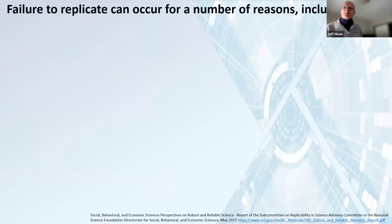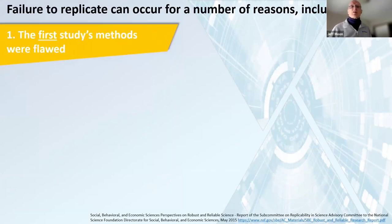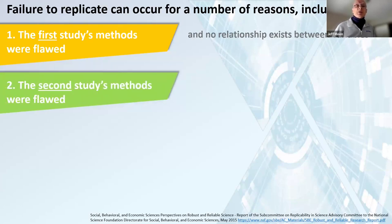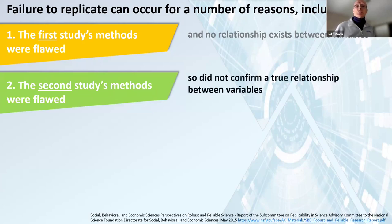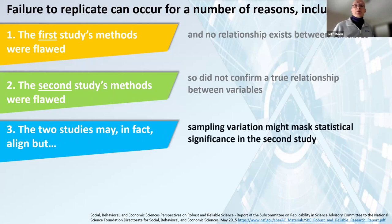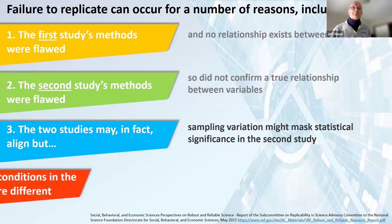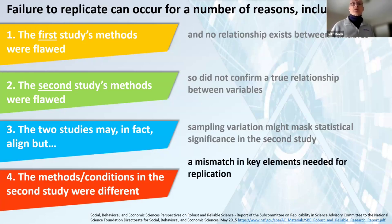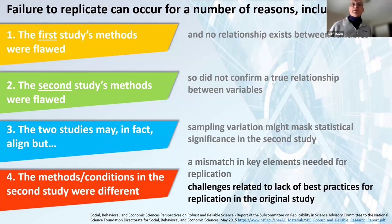The US National Science Foundation reports that failure to replicate can occur for several reasons: the first study's methods may have been flawed and no relationship exists between the variables; the second study's method may have been flawed and did not confirm a true relationship found in the first; the two studies may in fact align but sampling variation might mask statistical significance; or the methods and conditions in the second study may have been different, with a mismatch in key elements needed for replication, or lack of best practices for replication in the original study.